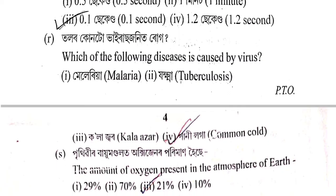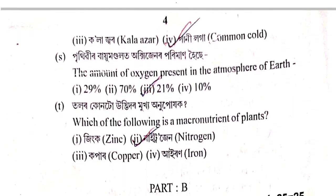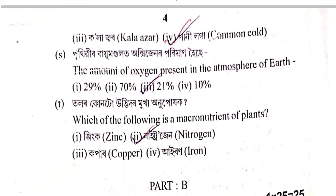Next question: Talar kuntu virus janita zhug? Which of the following diseases is caused by a virus? Options: malaria, tuberculosis, otha jokhma (chickenpox), kolazor, or paniloga (rabies/waterborne disease)? The correct answer is paniloga.